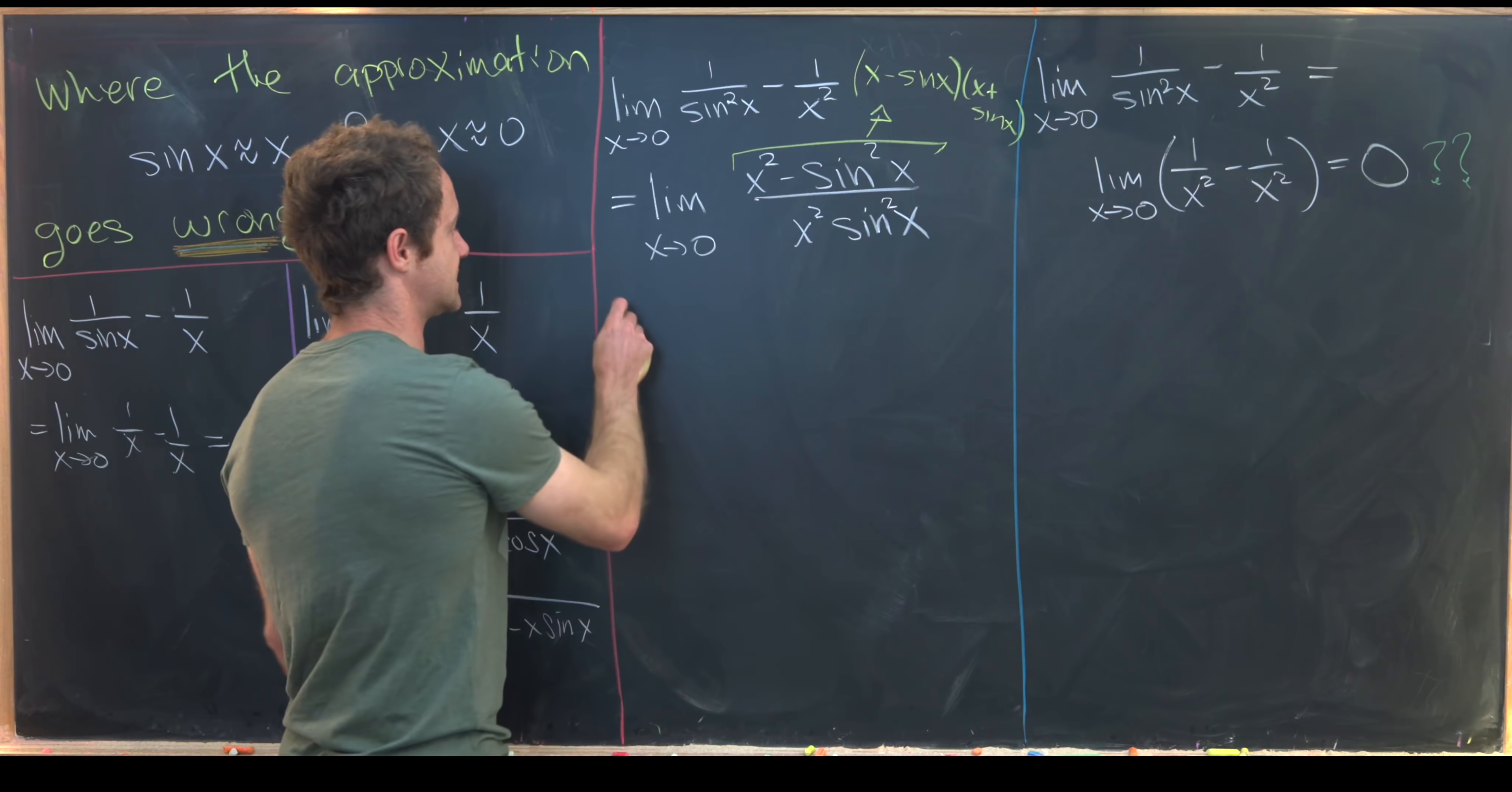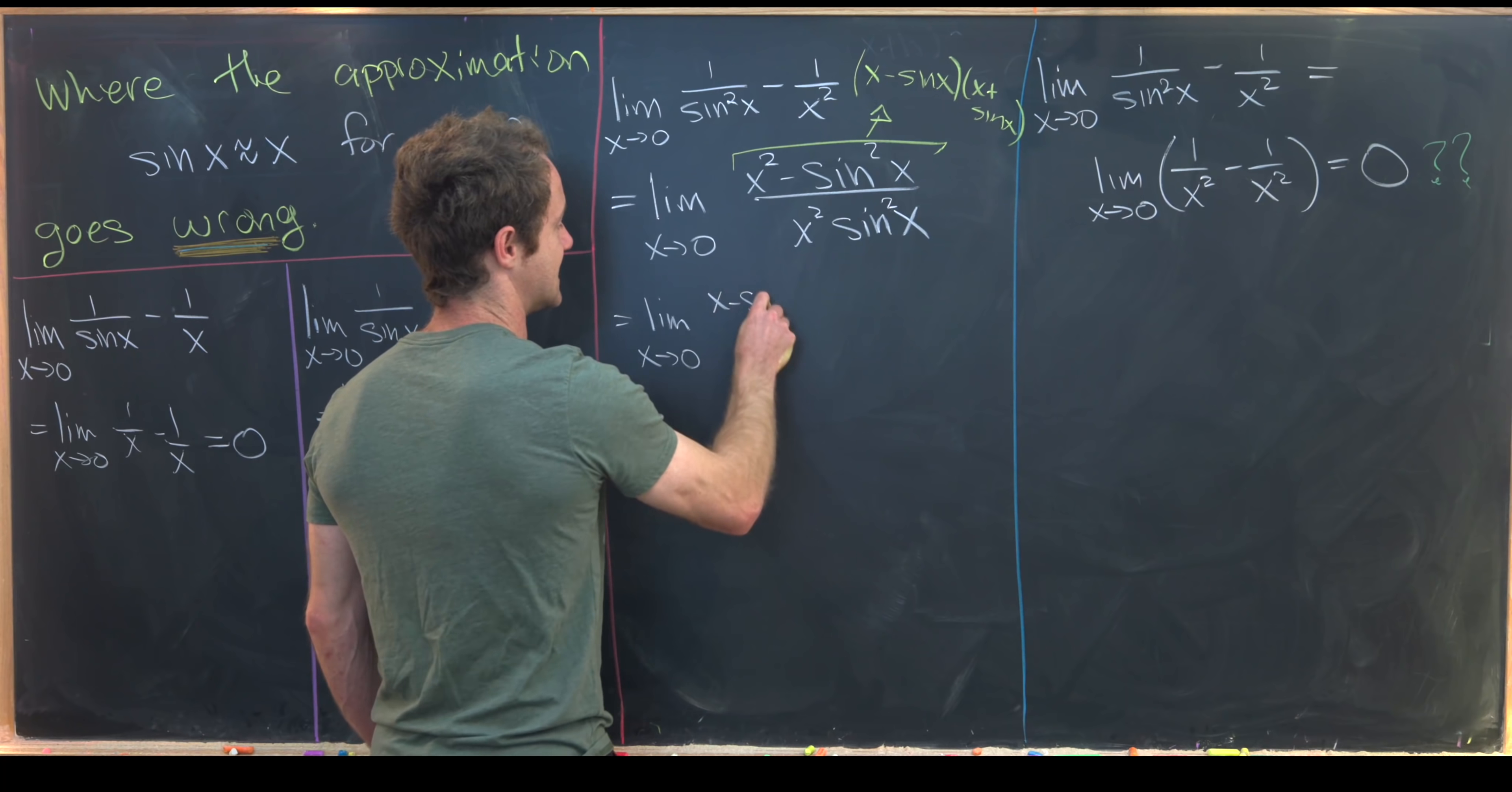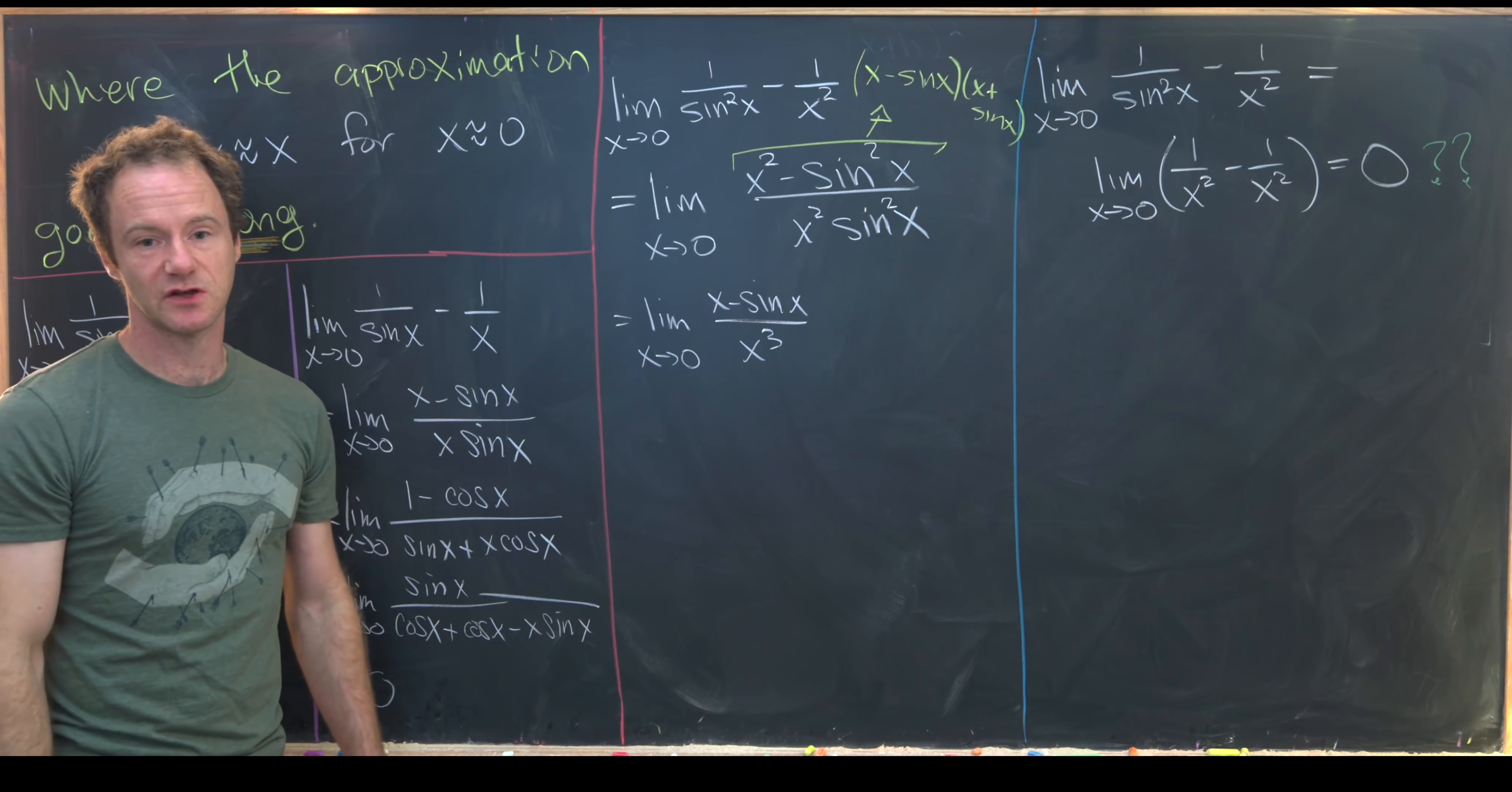Okay, so let's see. We'll have this limit as x goes to zero of x minus sine of x over x cubed. You might say, well, why x cubed? Well, let's see why we need that.